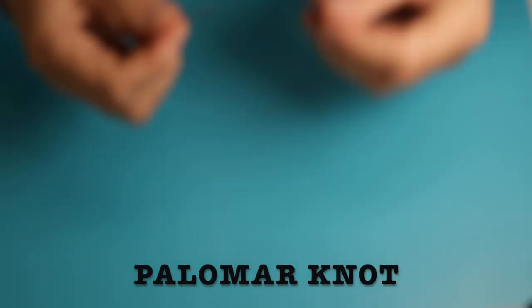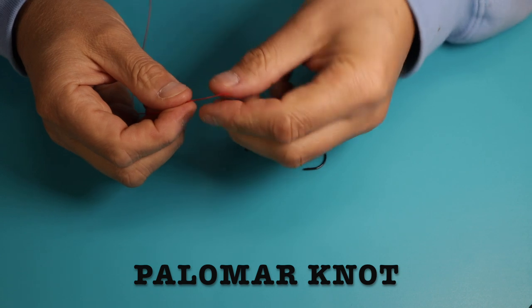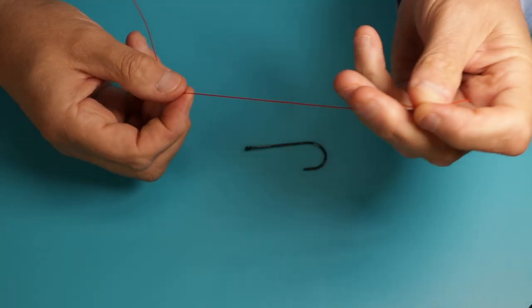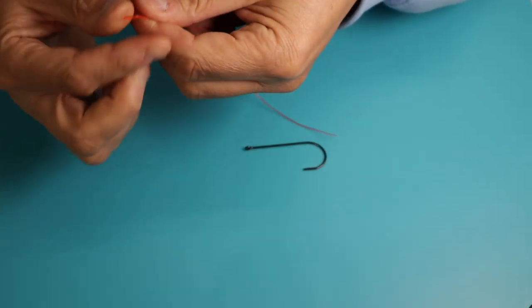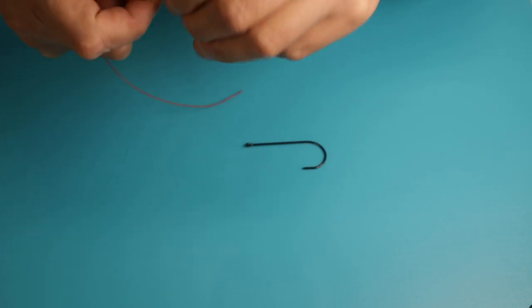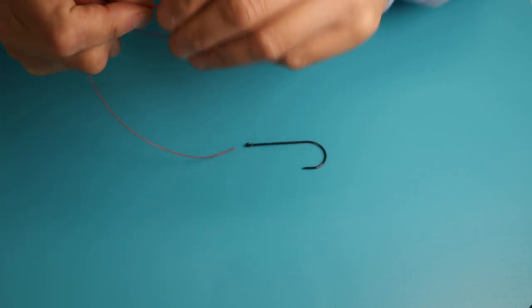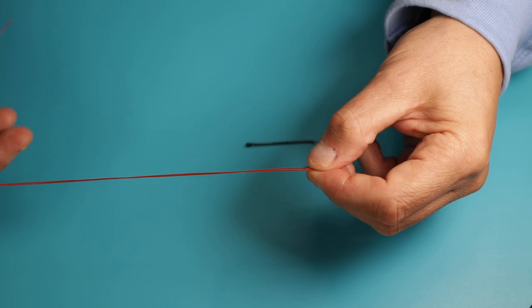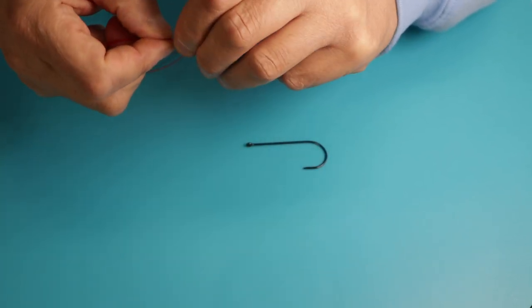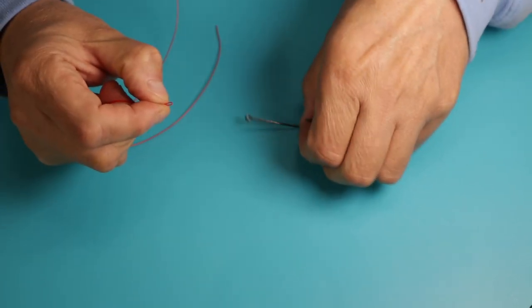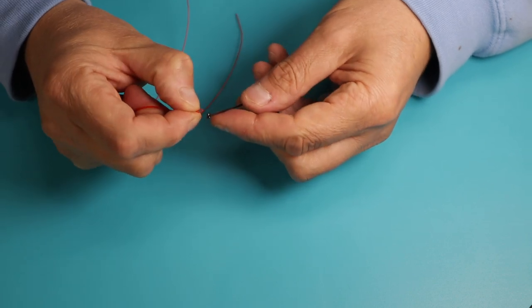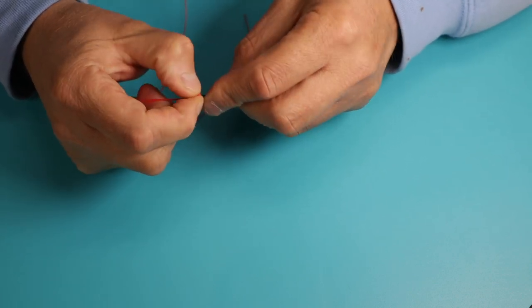The next knot that I'd like to show you is the Palomar knot. Now the Palomar knot is a very strong knot, and at first you need to double over your line and squeeze the ends together, giving yourself plenty of line to work with. Squeeze to the point where it doesn't crimp your line but it's small enough to go through the eye of your hook.